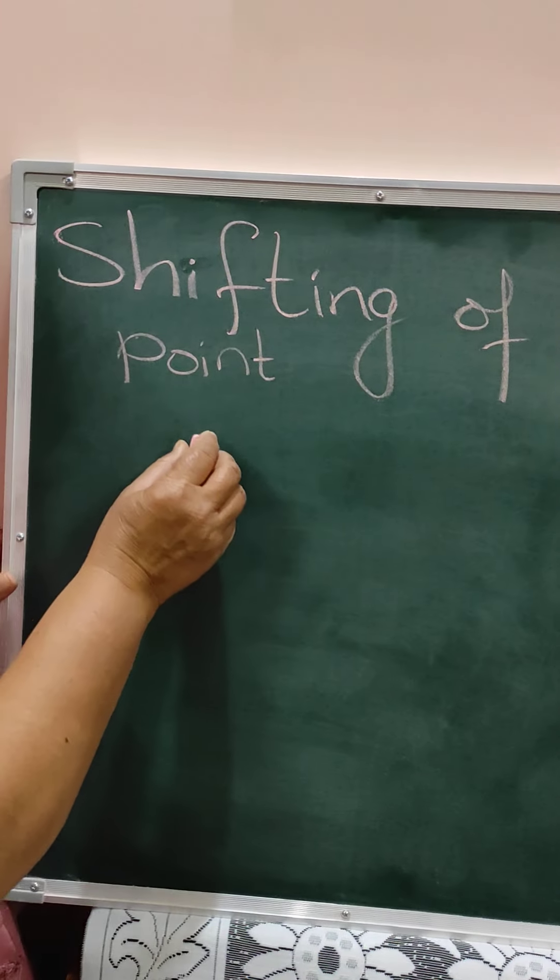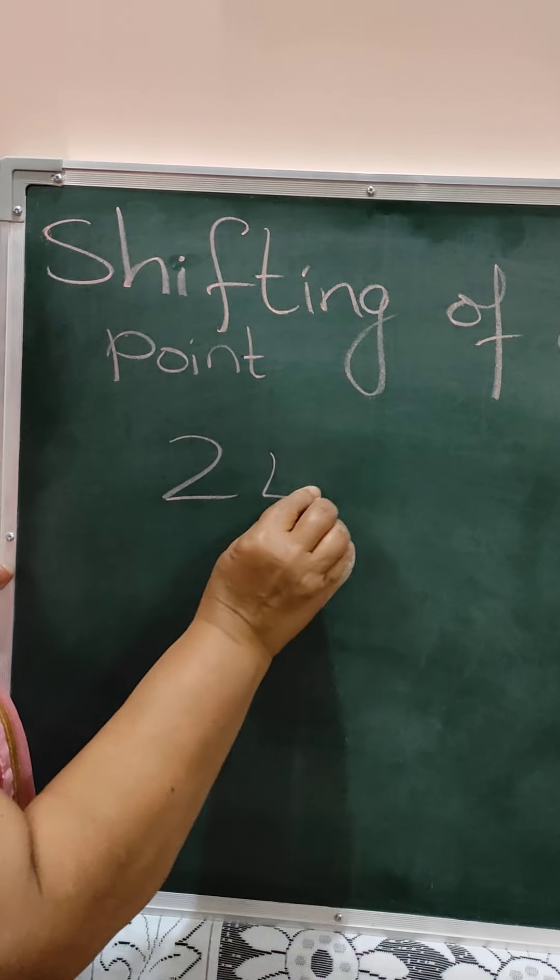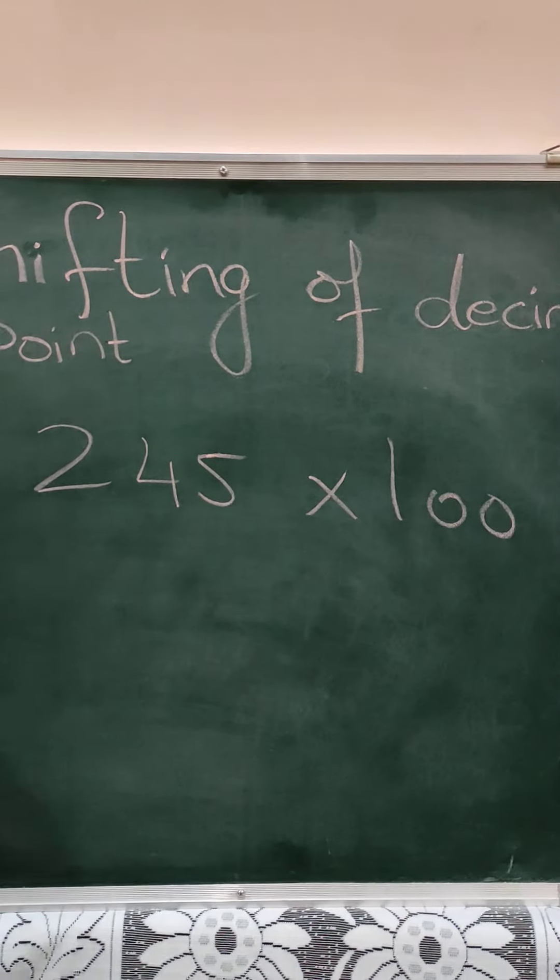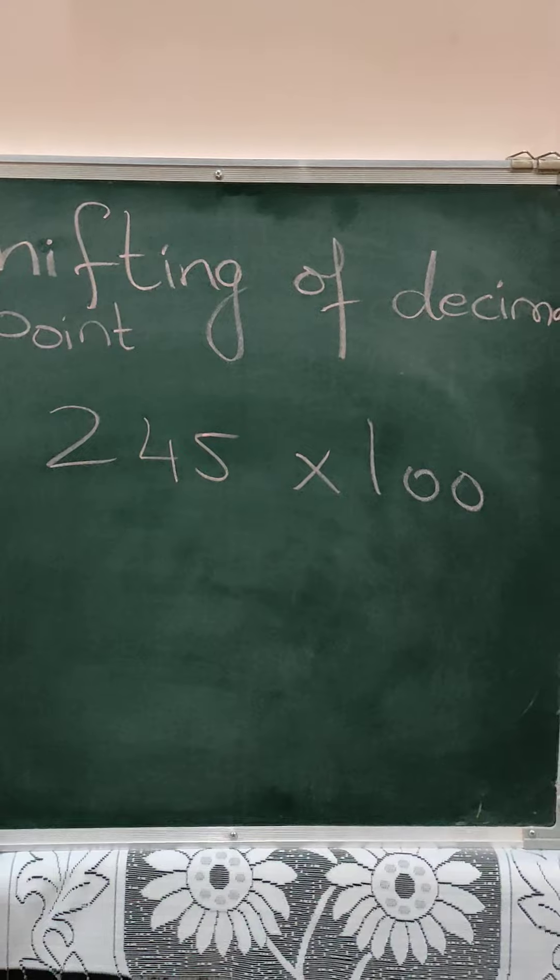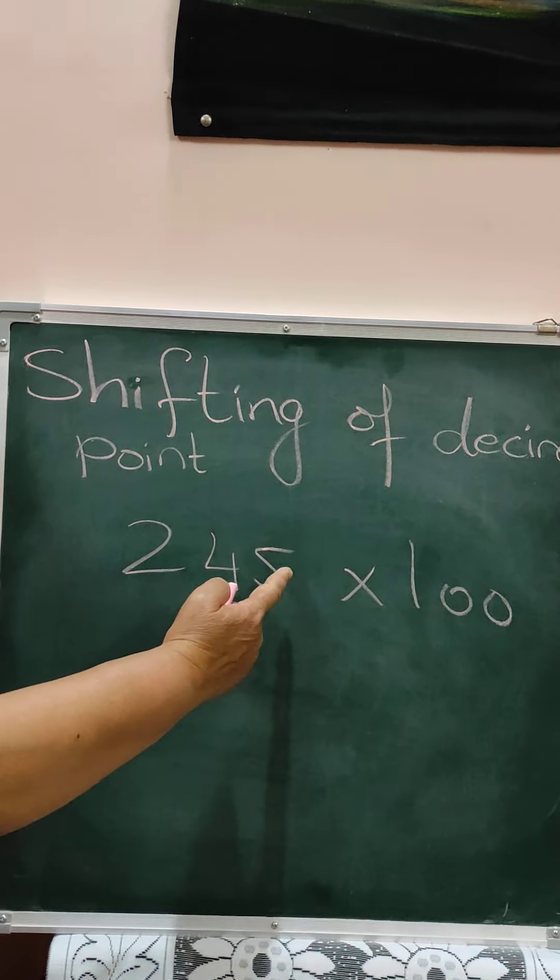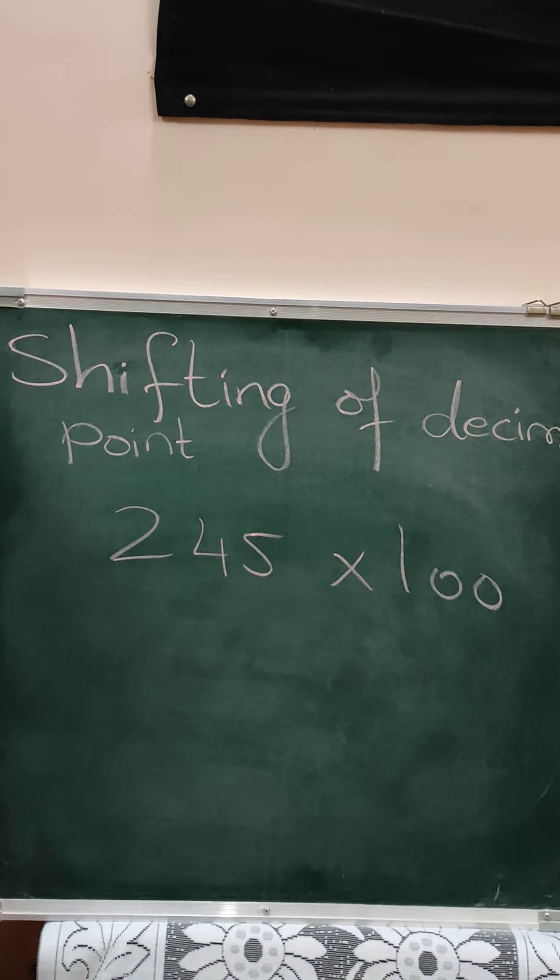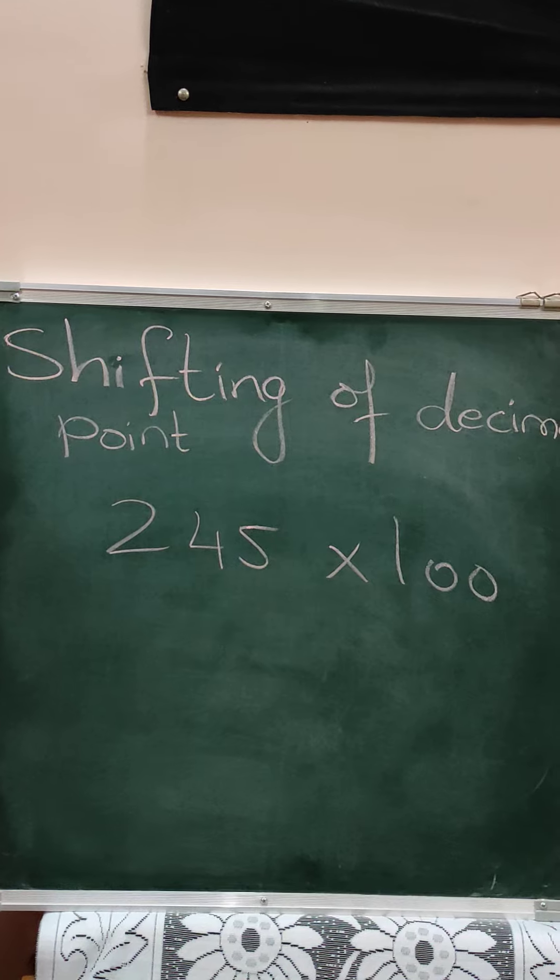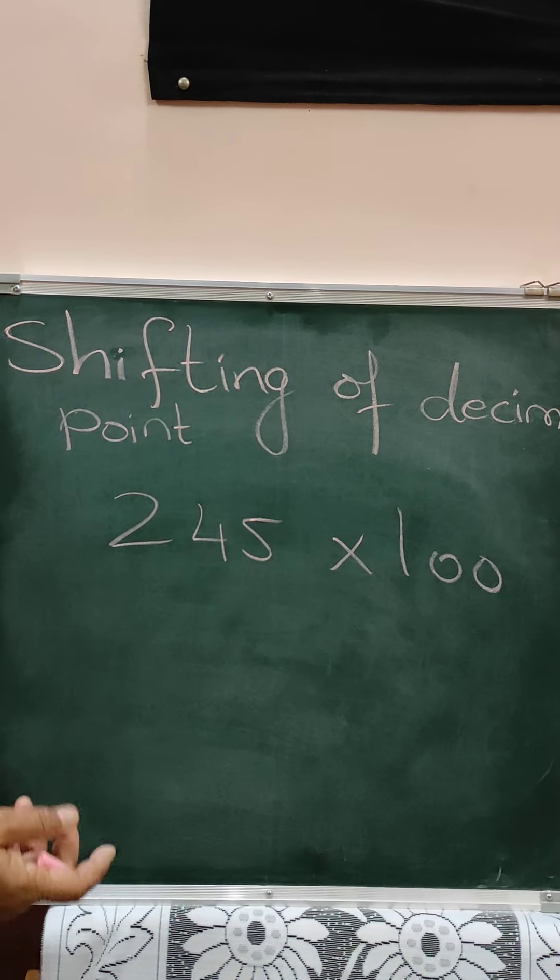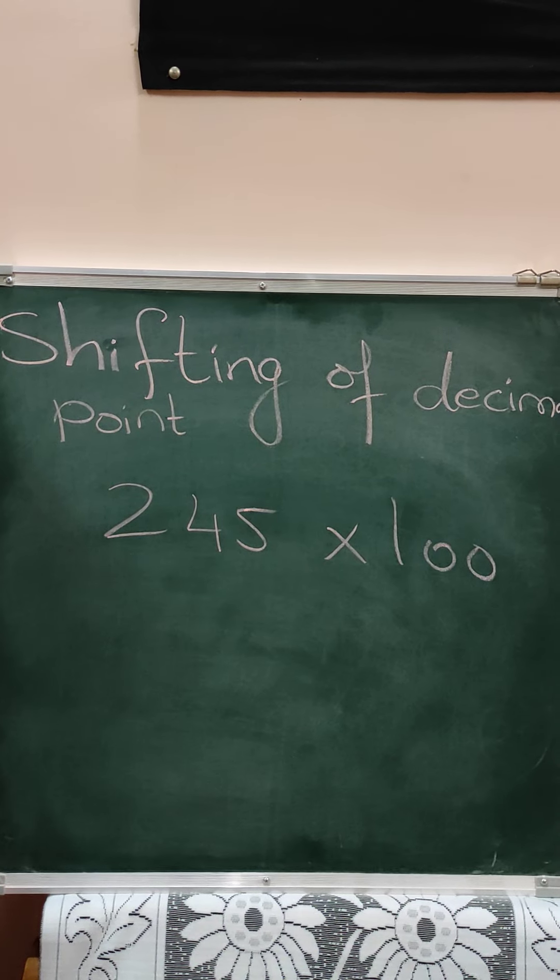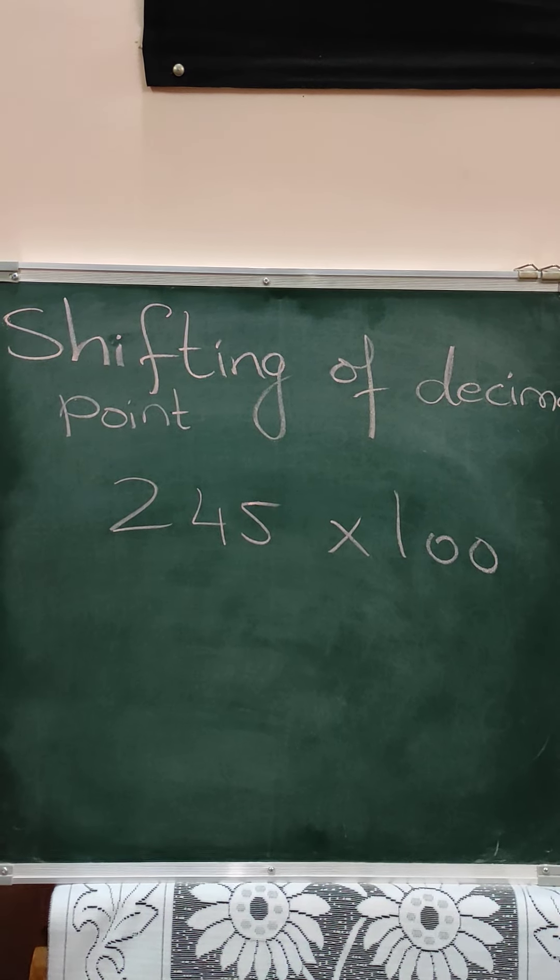Now if you see the sum 245 multiplied by 100. See children, in the last video I told you, if you cannot see any decimal point, you should consider the decimal point to be at the end. Now some children, not all, but some children, what they do, they just start multiplication. But children, we have to learn this.